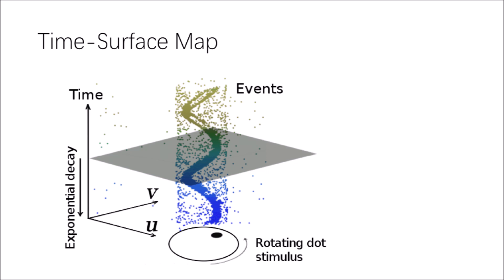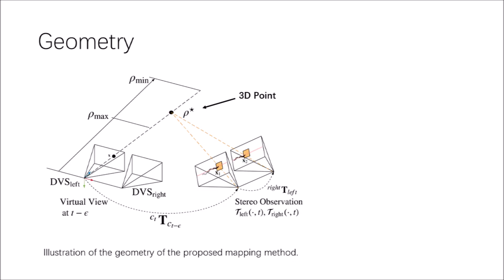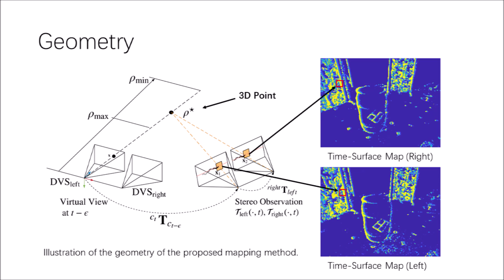To establish effective stereo data association, we create a distinctive representation of events by advocating the use of time surface maps, which were originally proposed for event-based pattern recognition. A detectable 3D point in the overlapping field of view of the event cameras will generate an event on both left and right cameras. Ideally, these two events should spike simultaneously, and the coordinates should correspond in terms of the epipolar geometry defined by both cameras. This property enables us to view data association based on stereo temporal consistency.